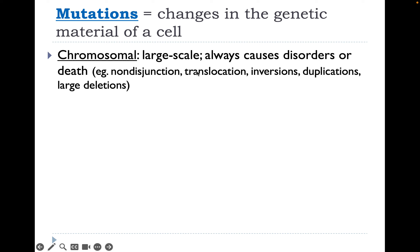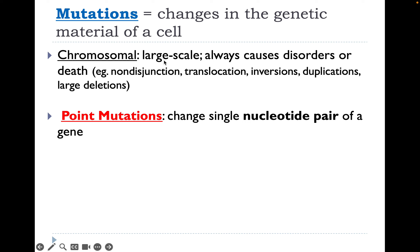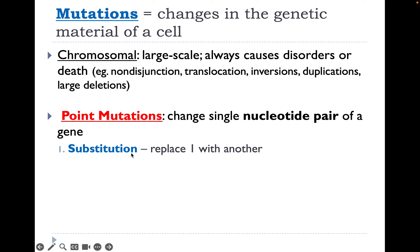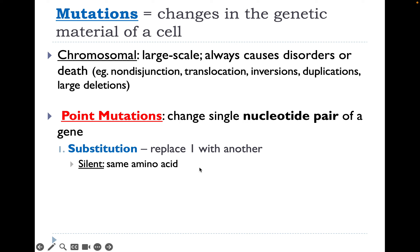Chromosomal mutations are large-scale and almost always cause disorders or death. Examples include non-disjunction, translocation, inversions, duplications, and large deletions — we'll discuss these more when we cover meiosis and heredity. Point mutations change a single nucleotide pair of a gene. There can be a substitution where one nucleotide is replaced with another. Often these are silent — producing the same amino acid because of the wobble effect, where the third letter in an mRNA codon doesn't always make a difference.